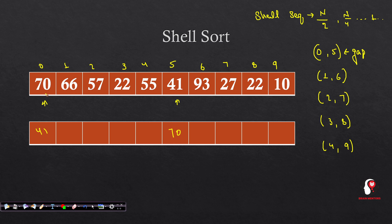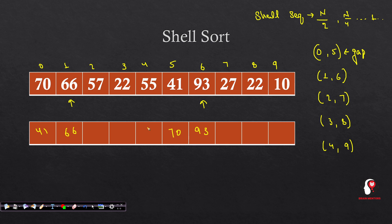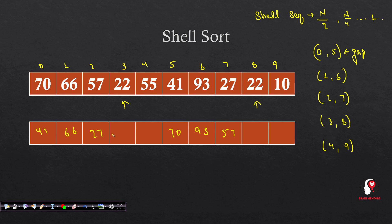41 was compared with 70; since it was smaller, we brought it here, otherwise it would stay as is. Next, we compare 66 and 93 - they are already sorted, so no swap. Next window is 2nd index and 7th index: 57 and 27 are not sorted, so 27 goes here and 57 there. Then 3rd and 8th index are already sorted. Finally 4th and 9th index: 10 will appear here and 55 there.